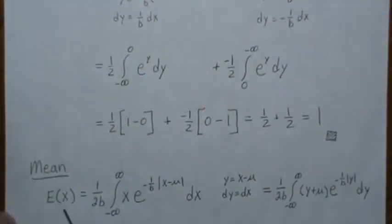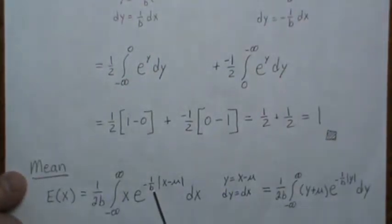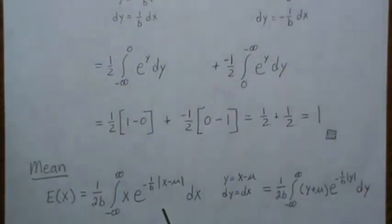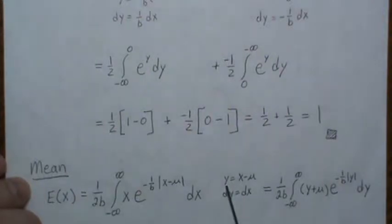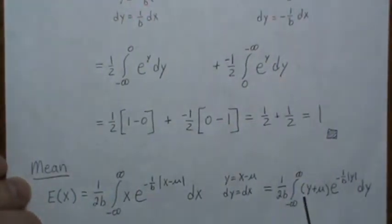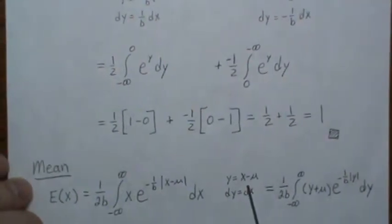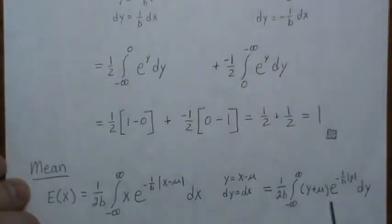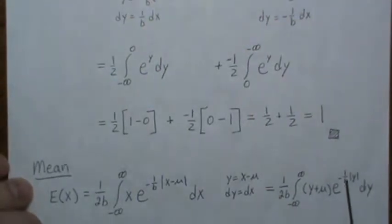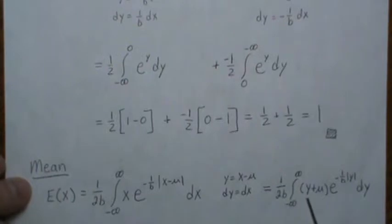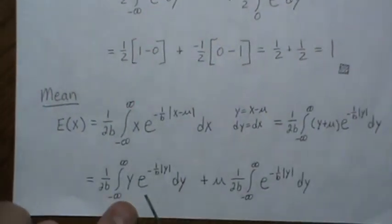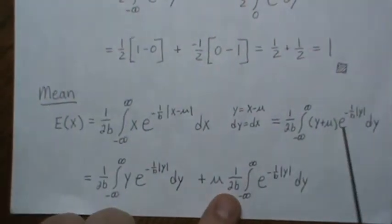For the mean, we multiply x by its density and integrate over all possible values. We're going to do this a different way just to show there's more than one approach. We let y equal x minus mu, so dy equals dx, and back-solving gives x equals y plus mu. Substituting, we get negative one over b times the absolute value of y in the exponent. We then separate y plus mu and split the integral into two parts.